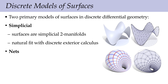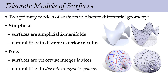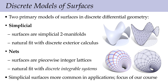The other model is what are called nets — mappings of the integer grid into three-dimensional space, where you have little patches of surface that are pieces of the integer grid. These arise naturally in discrete integrable systems and computational architecture, with very beautiful discrete differential geometry. We might touch on these later, but they're worth reading about. We focus on simplicial surfaces because they are more common in geometry processing and physical simulation.